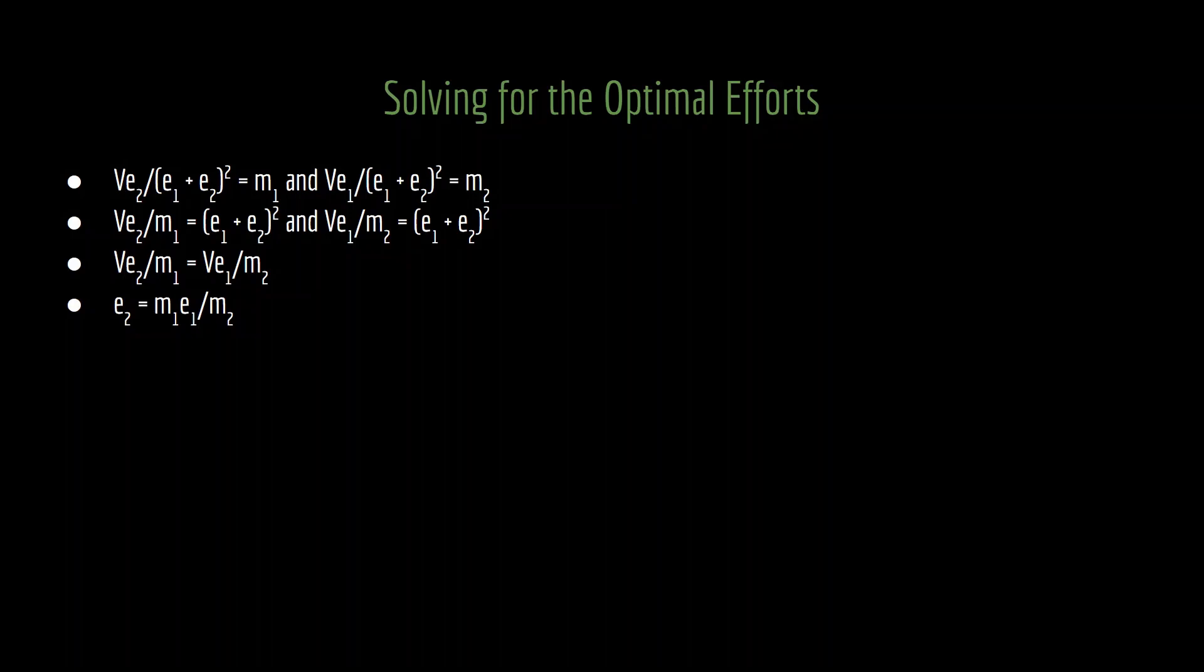You'll notice that in both of the equations in line two, we have an identical side. Specifically, both of the right-hand sides are equal to the sum of the efforts squared. That means we can set the two left-hand sides equal to one another. And having done that, we can now put one party's effort in terms of everything else. So here I've done that with player two. Player two's effort is equal to the marginal cost of player one times the effort level of player one divided by player two's marginal cost.